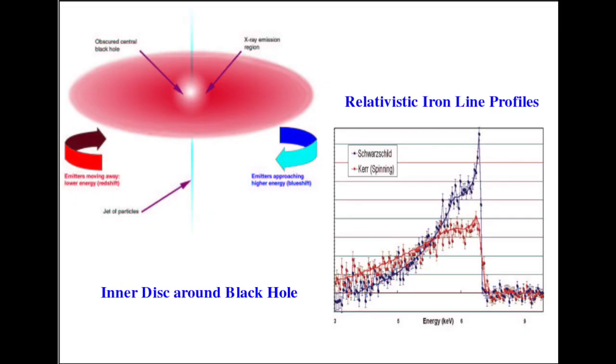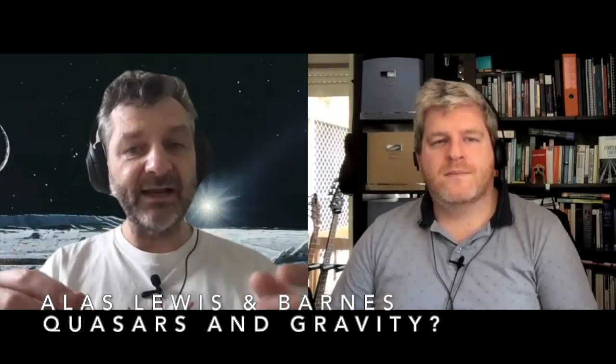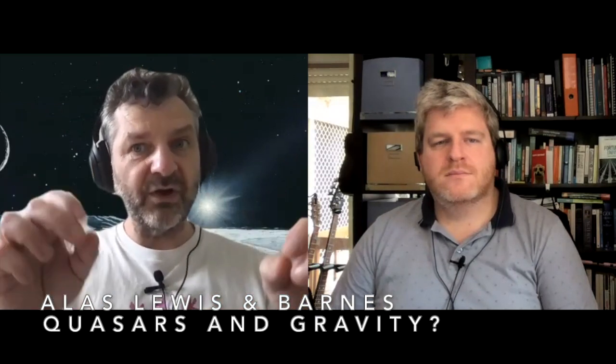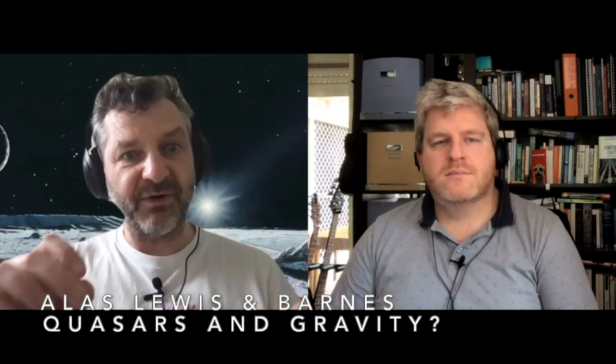But when we see iron emission from quasars, we don't see a sharp feature at all — we see a very broad and actually lopsided feature. It's broad because the material is swirling around at high speed, so emission from one side is strongly redshifted and the other side is strongly blueshifted. When we do our calculations, we have to account not only for the redshift and blueshift, but also the shift that occurs as photons climb out of the gravitational potential.